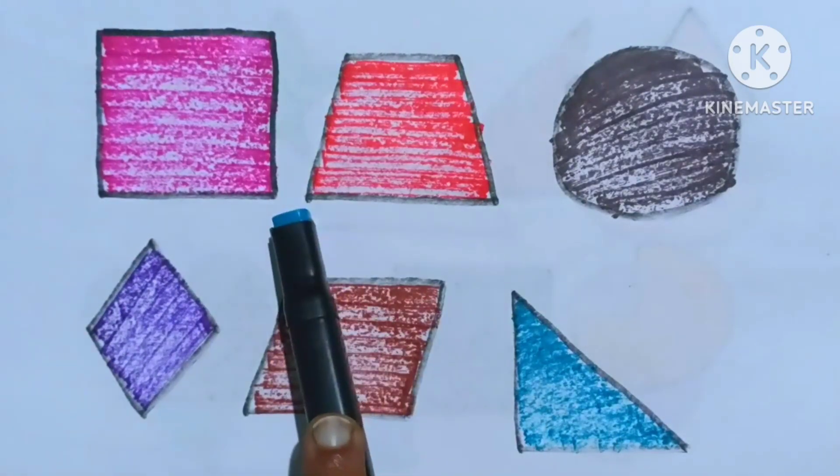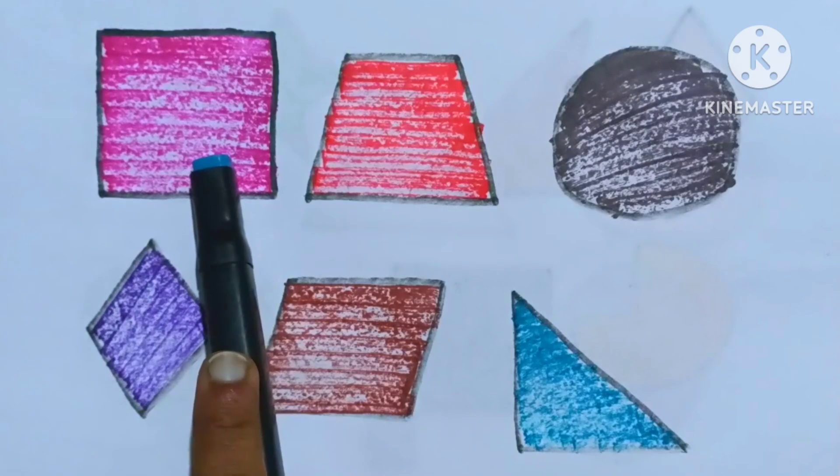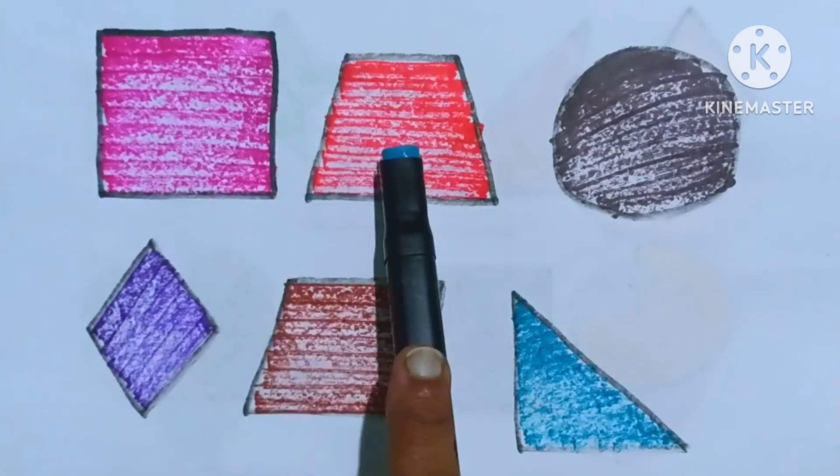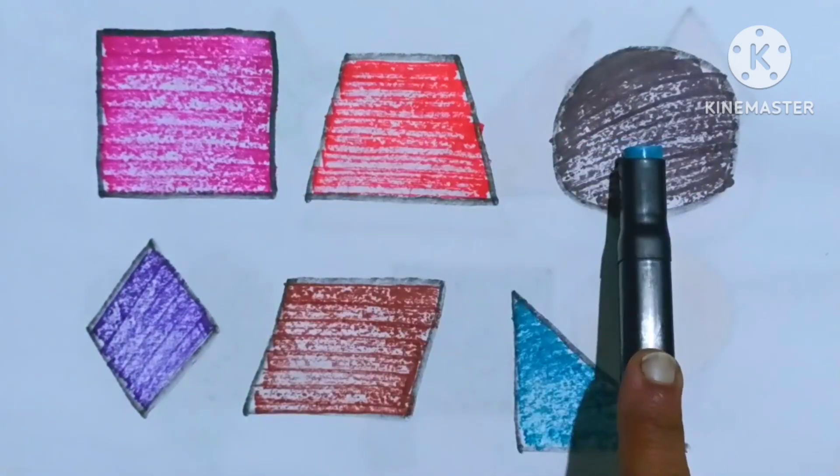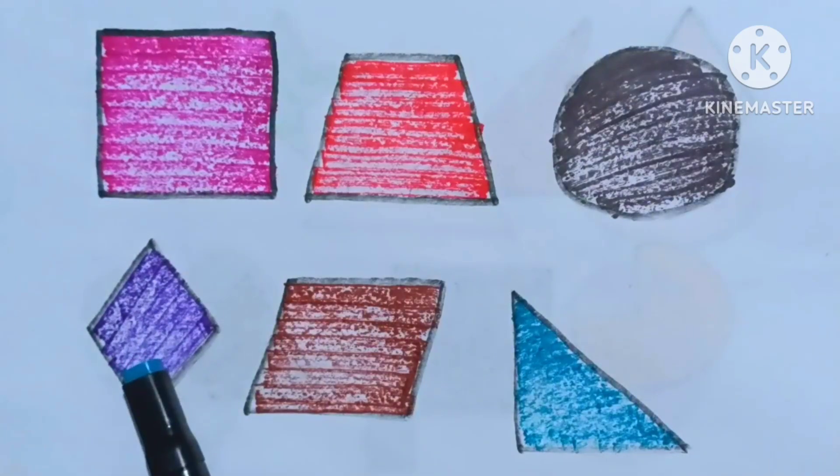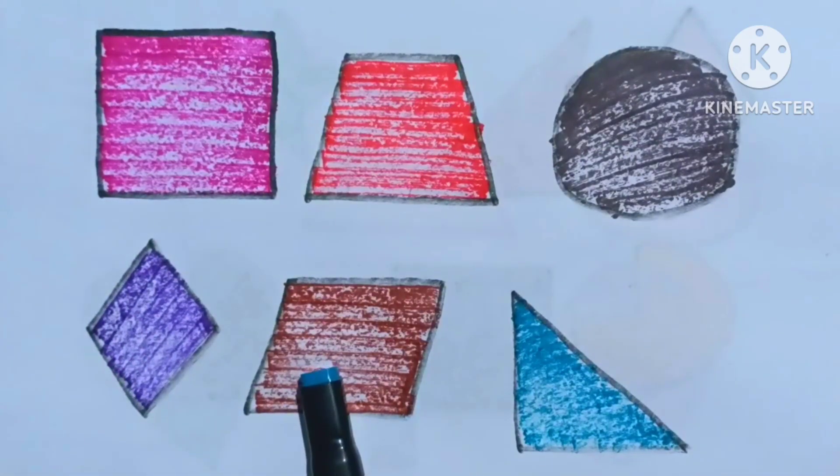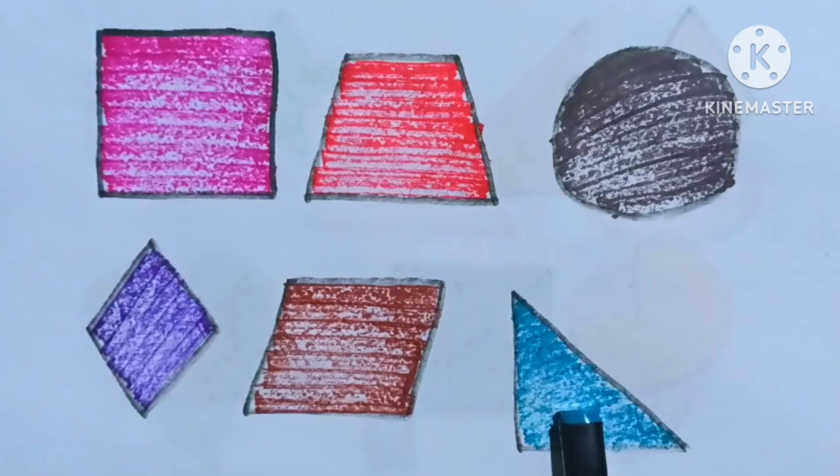Now learn the shapes, kids. Which shapes? A square shape. It's a trapezoid shape. It's a circle shape. It's a diamond shape. It's a parallelogram. It's a right triangle shape, kids.